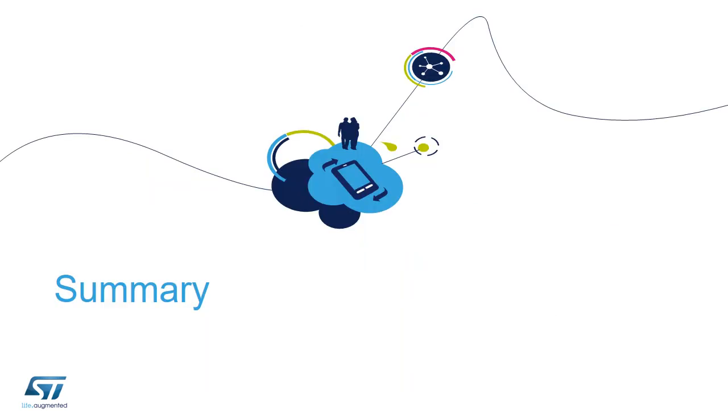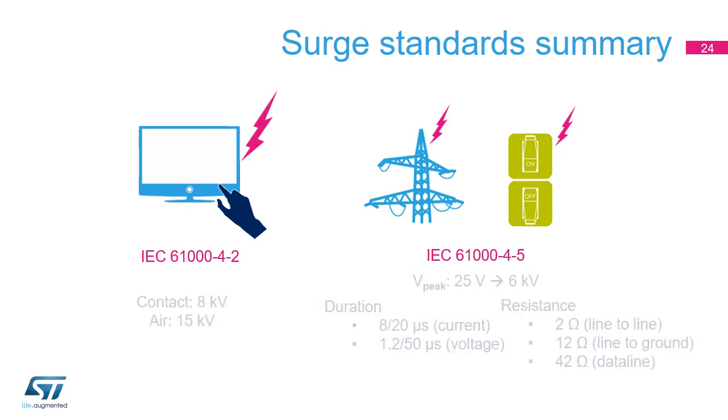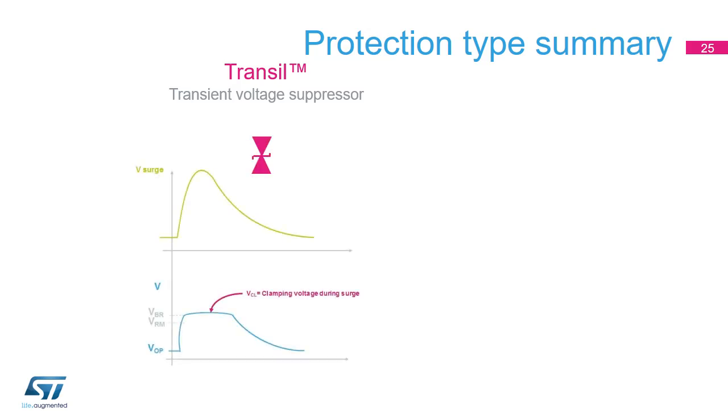So now let's summarize all we've looked at about protection. In this seminar we have described the two main standards, IEC 61000-4-2 and 61000-4-5. We have described their key parameters and which standard you should consider for an application. In addition, we have described two reliable types of protection available from ST. Transils, as transient voltage suppressors, clamp the voltage, while trisils, as crowbar diodes, short-circuit the lines.